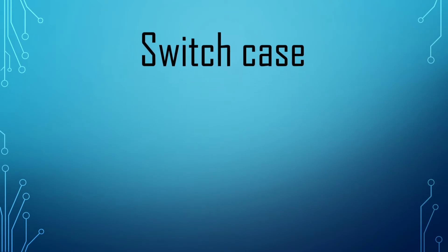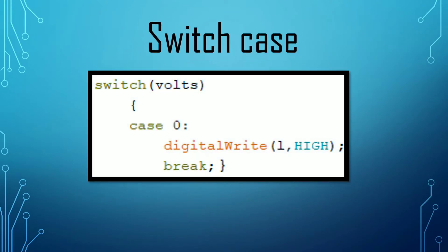Let us now know about switch case. Here I have given a simple format of switch case. Inside the bracket of switch, we will have to write the name in which we have stored the numerical value. So here I have named it as volts. Then I have written case 0, which will mean that when the value of volts will be 0, then the condition inside it will work.